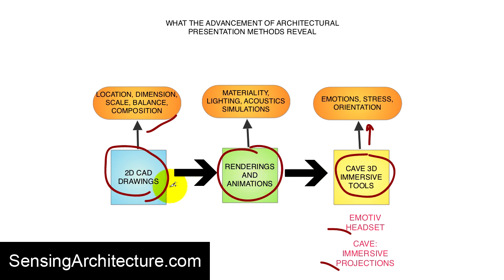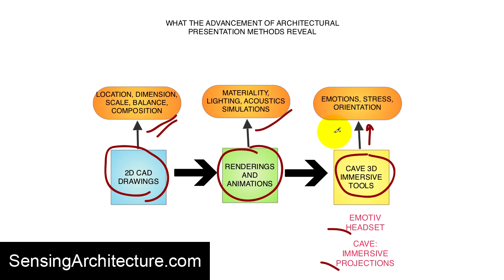With different ways of visualizing architecture, keep in mind that you can extract different bits of information. With 2D CAD drawings, you can extract location, dimension, scale, balance, and composition. With renderings and animations, you can extract sensory information like materiality, lighting, acoustics, and other types of simulations. And with CAVE 3D immersive tools, you can begin to extract information in real time as your client or you experience this virtual architectural simulation — extracting emotions, stress levels, or even orientation on the fly.